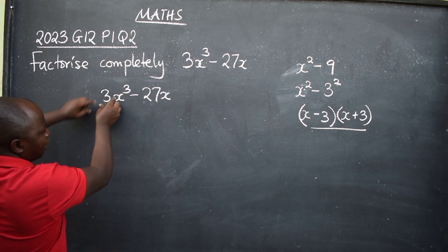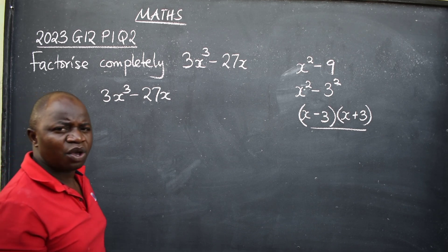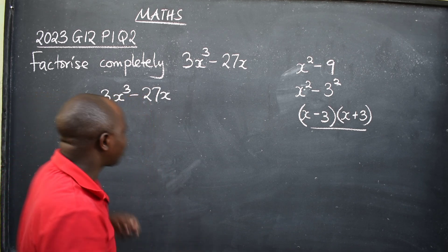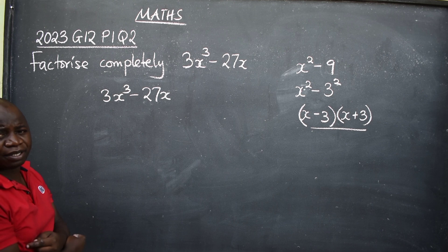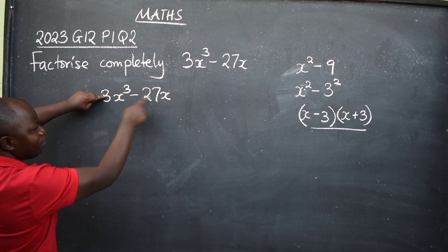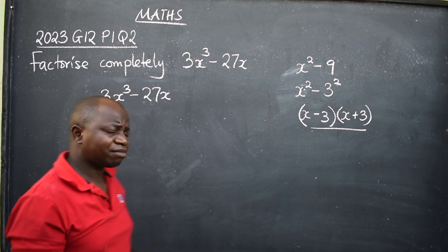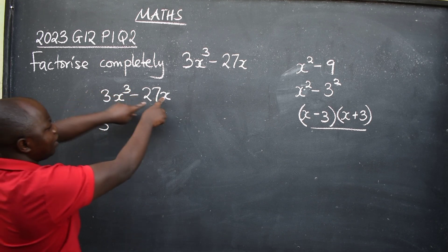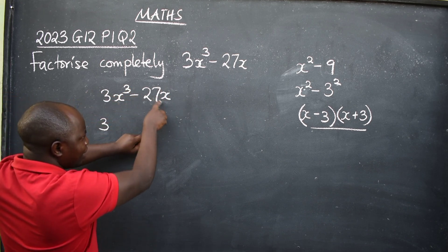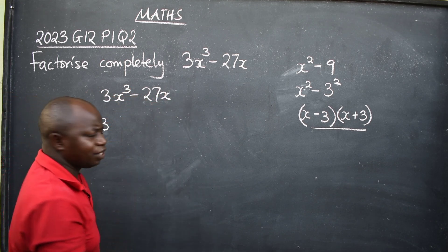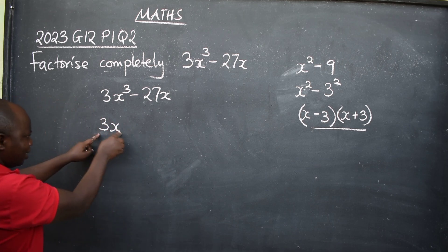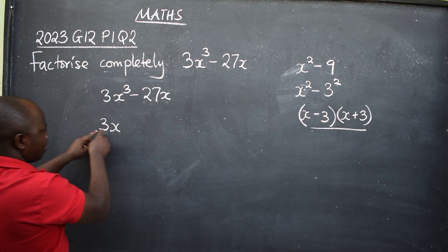They are telling me to perform common factorization first. With common factorization, we look at the two terms that we have. What is common? With the numbers, 3 is common because it can go into 27. We come to the variables, the letter x. We have x to the power 3 and x here. You get the lowest degree, which is x. So 3x is what is common here.